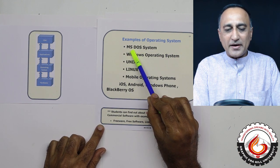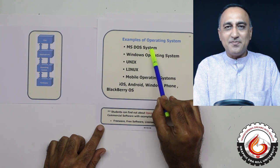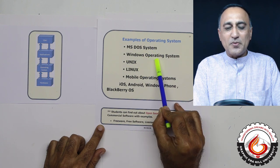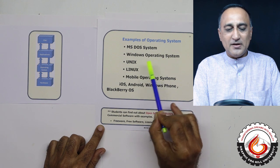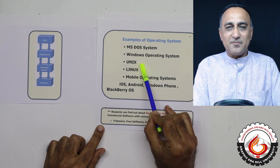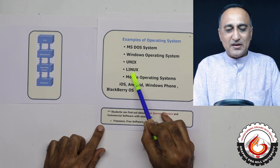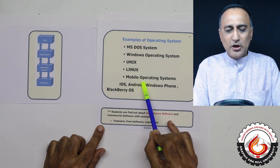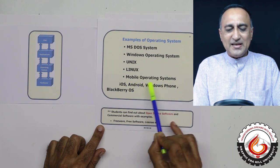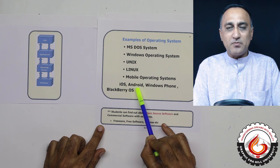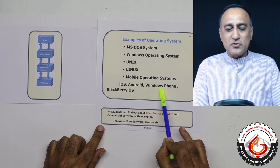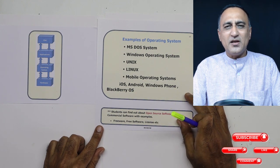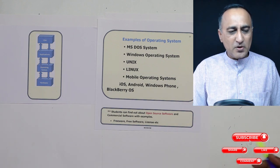Examples of operating systems include Microsoft Disk Operating System, which you may not be aware of — it was used when we were studying. Then there's the Windows operating system: Windows 7, Windows 10, and so on. The Unix operating system, where C was designed. The Linux operating system, which some of you may be using. We also have mobile operating systems like iOS for Apple phones, Android on other phones, and Windows on Microsoft phones. And there's Blackberry, which is actually not very used now because the company is probably not even running.